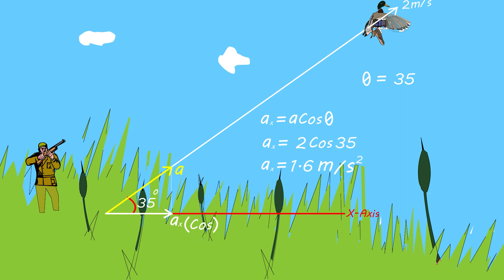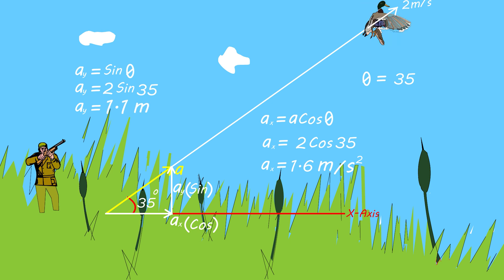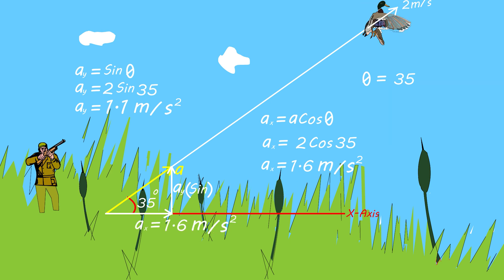The vertical component is opposite to the angle, so ay = a sine theta. Substituting: ay = 2 sine 35 = 1.1 meters per second squared. Therefore, the duck accelerates in the x direction at 1.6 m/s² and in the y direction at 1.1 m/s².